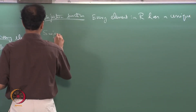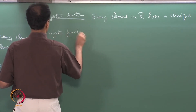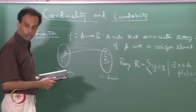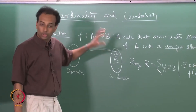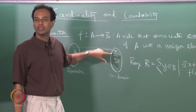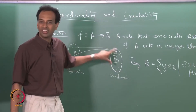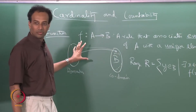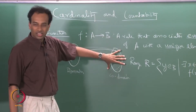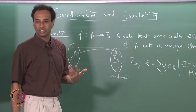A surjective function, also called an onto function, is a function for which the co-domain and the range are the same. In other words, the surjective function does not leave out anything in the co-domain. A function that does not leave out elements in the co-domain is called a surjective function — that is, R equals B.